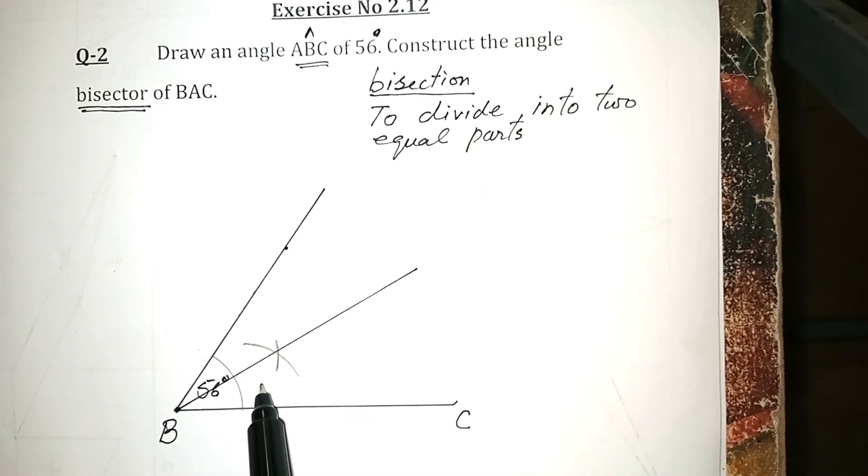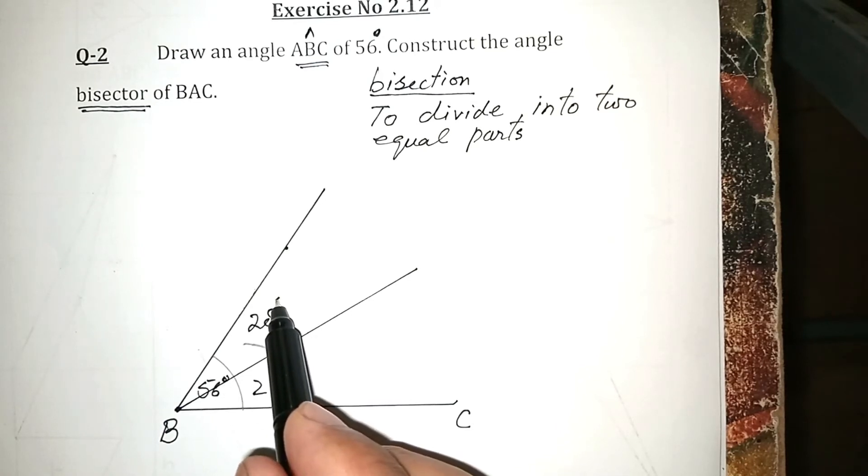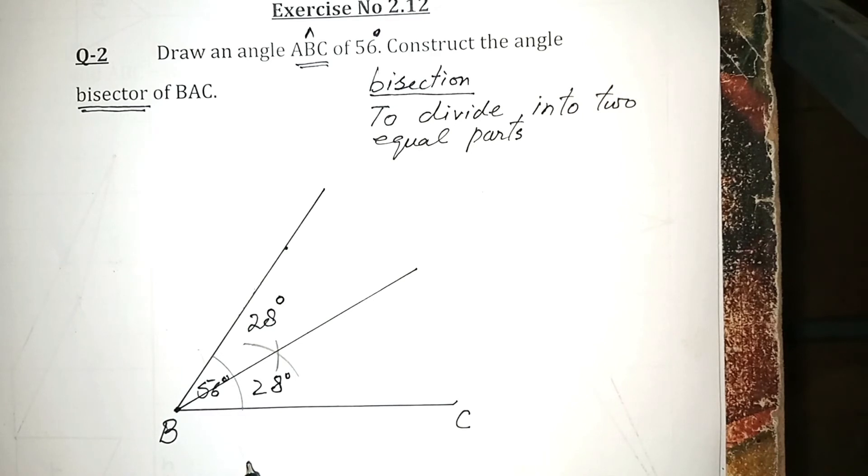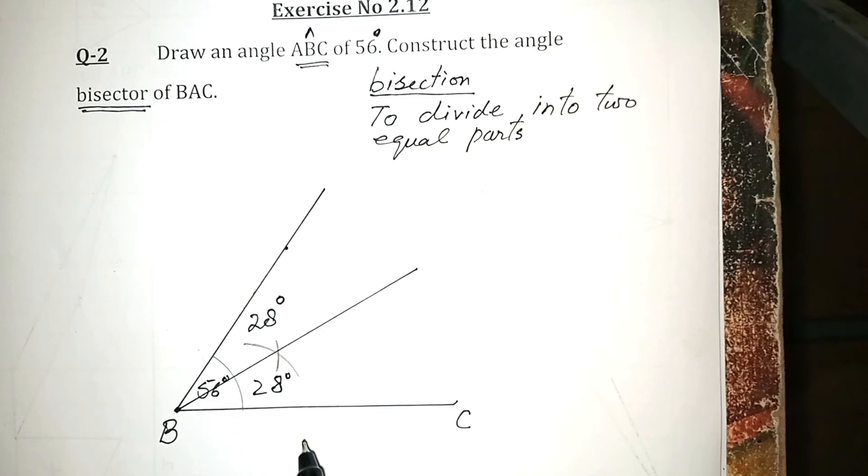Now when you measure this angle, it will be 28 degrees. And similarly, this will be a point. This is also 28 degrees. Now 56 has been divided into two equal parts. One is 28, the other is also 28.